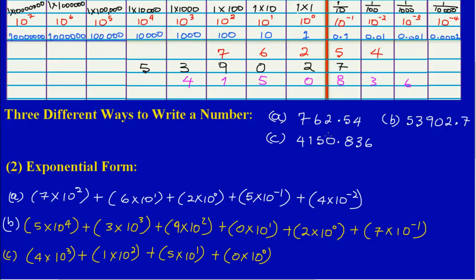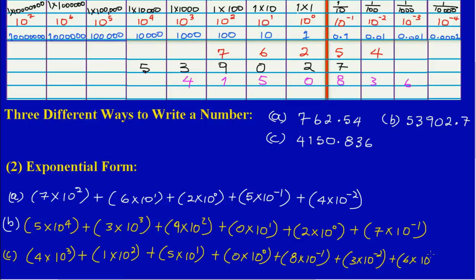As I move across the decimal point, in the tenths column I have 8, so (8 × 10⁻¹). In the hundredths column — the 2nd column to the right of the decimal point — I have (3 × 10⁻²). And in the thousandths column I have (6 × 10⁻³). And it's that easy.